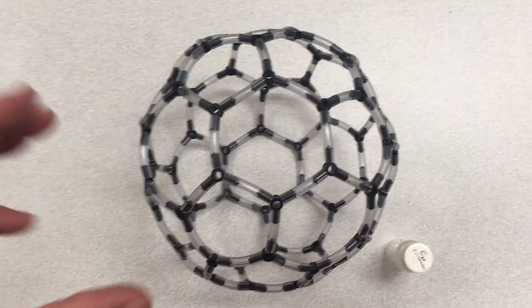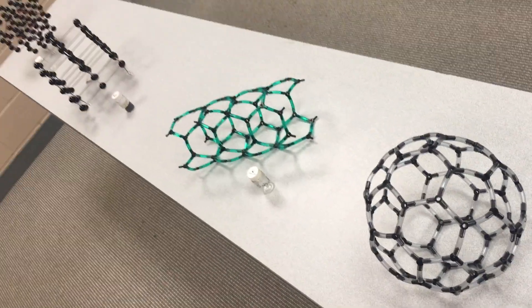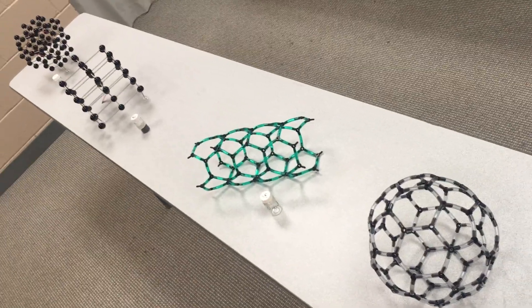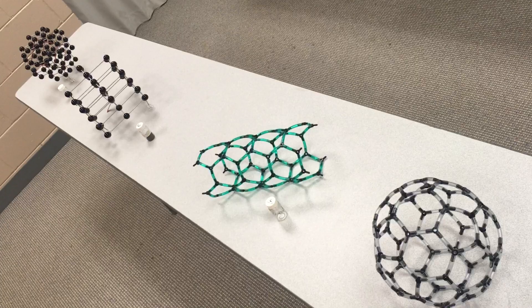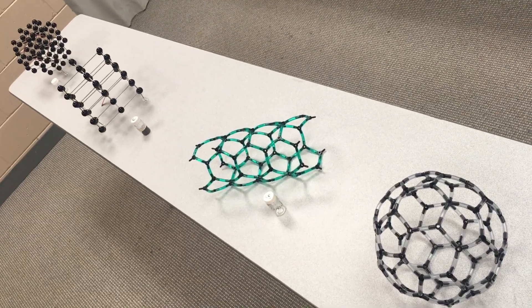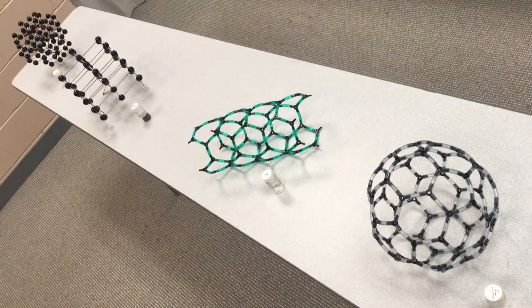So of these models, I want to point out that only one model, one structure represented by these models, has sp3 hybridized carbon, and that's diamond. The other models, the other structures represented by these models, all have sp2 hybridized carbon.